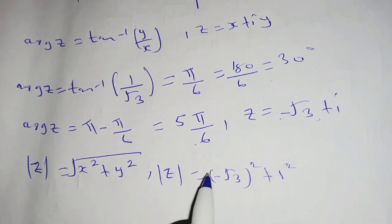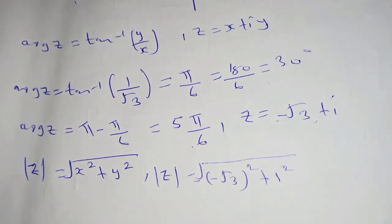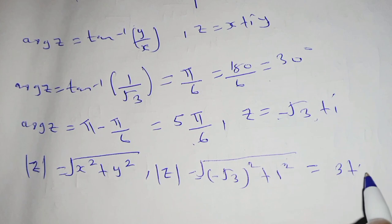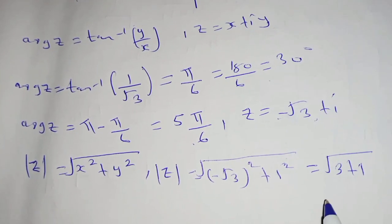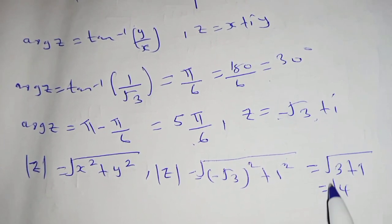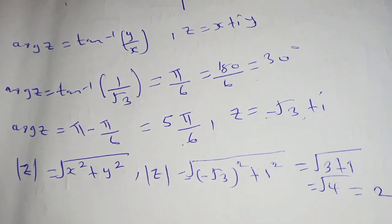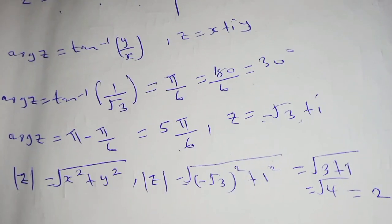...square root of negative root 3 squared plus 1 squared, which will give you square root of 3 plus 1, which is equal to square root of 4, which gives you 2. That is our result.